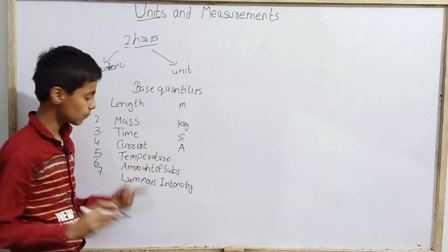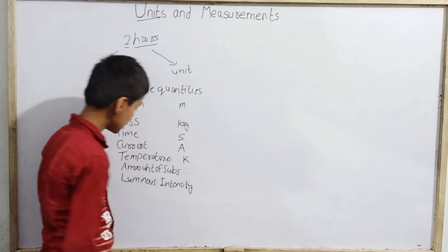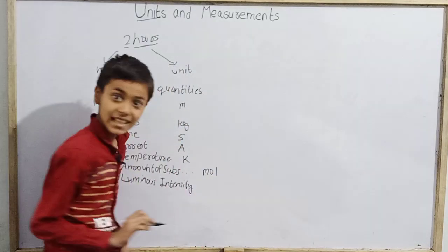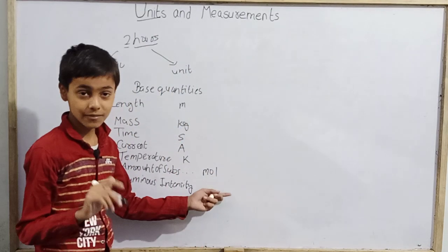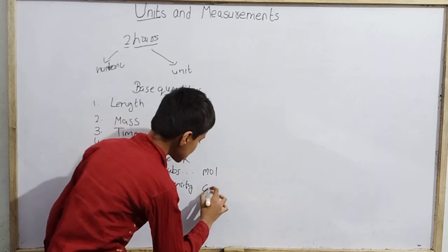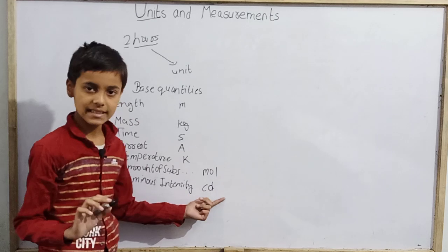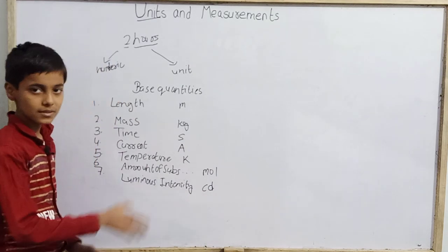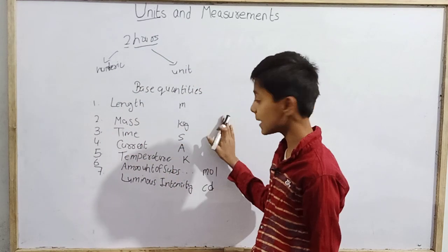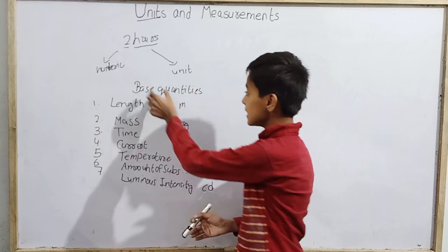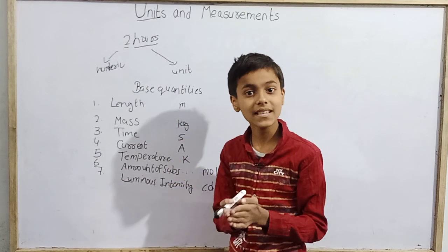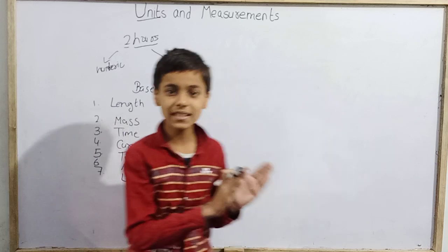So: length → meter; mass → kilogram (kg); time → second; electric current → ampere (A); temperature → kelvin (K); amount of substance → mole; and luminous intensity → candela (cd). These are the seven base quantities and their SI units.